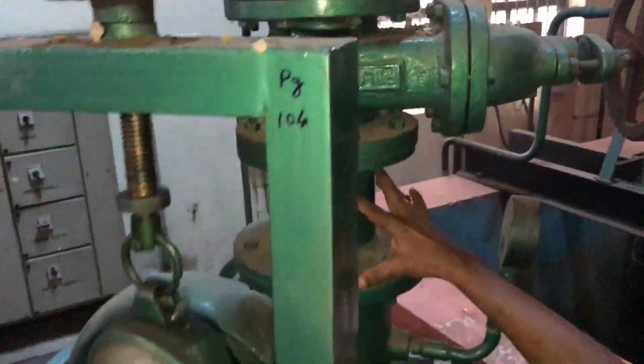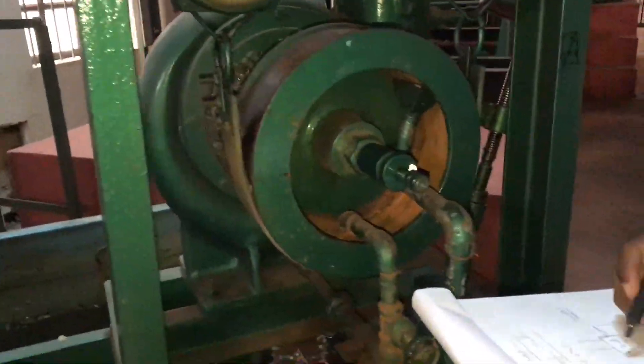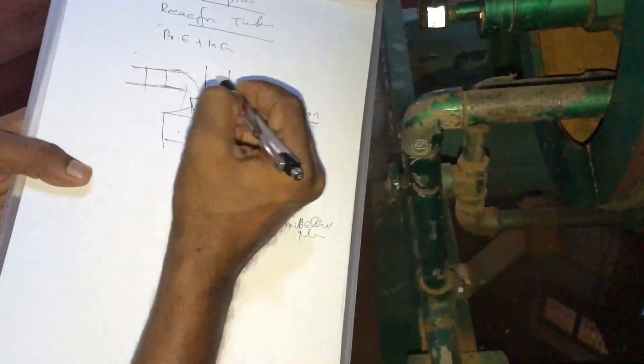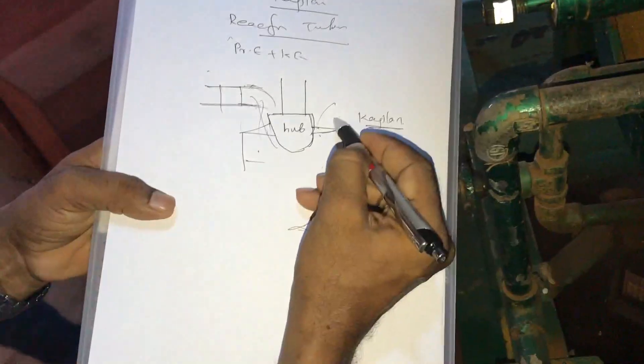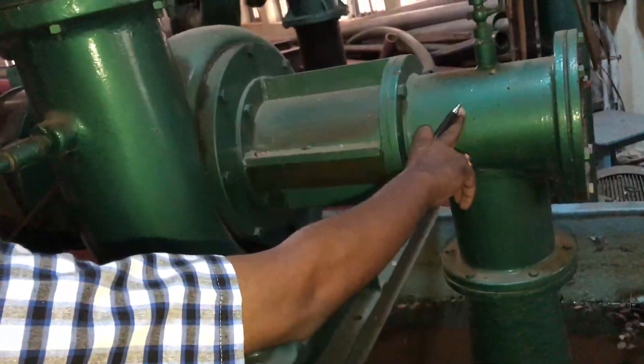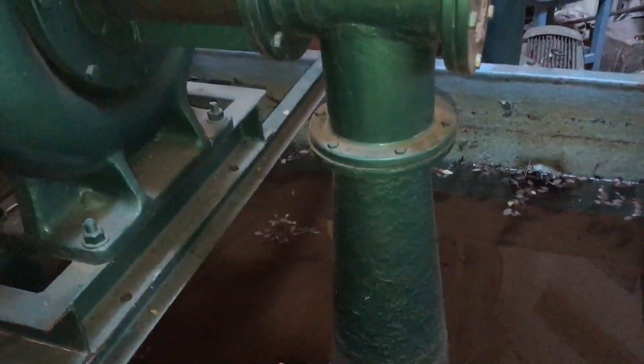This is the inlet of the turbine. Water available at this end has both pressure energy and kinetic energy. When the fluid passes through the stay vane, gate blade, and then the runner blade, the pressure energy goes on decreasing and is converted into kinetic energy. At the exit of the turbine the pressure is less than atmospheric. To discharge the fluid from the turbine exit to the tail race, a diverging pipe called the draft tube — specifically a conical draft tube — is used.